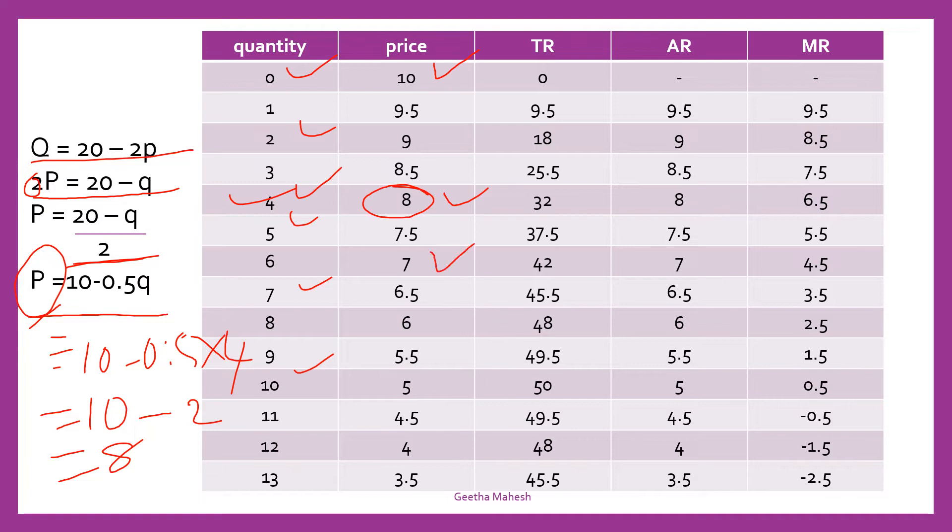When you lower the price, 7 rupees, the quantity demanded will increase. That is 6. If you charge 5 rupees, quantity demanded is 10. If you charge 3.5 rupees, quantity demanded is 13.